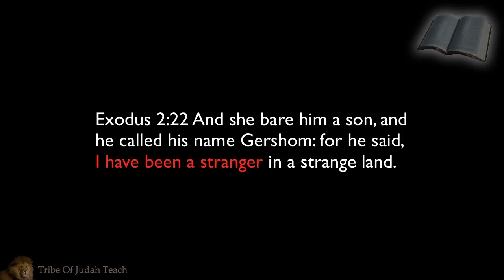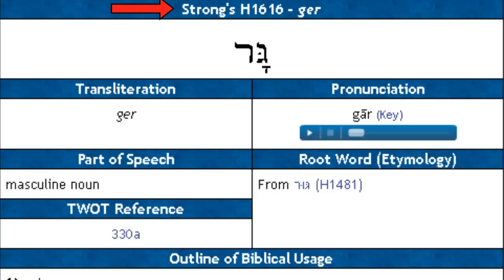For those people who say Israelites were never called strangers in the Bible, this one verse cancels that idea, because Moses was an Israelite, and he called himself a stranger in this verse. Now Moses said, I have been a stranger in a strange land. And when you look the word stranger up in this verse, you see that it's number 1616, and it's the Hebrew word gar. So we see that gar is used to describe an Israelite stranger.